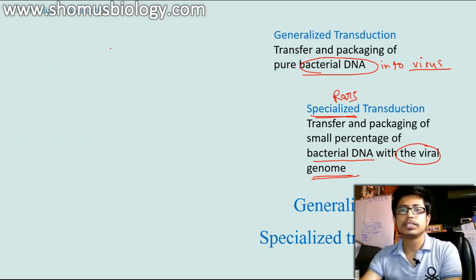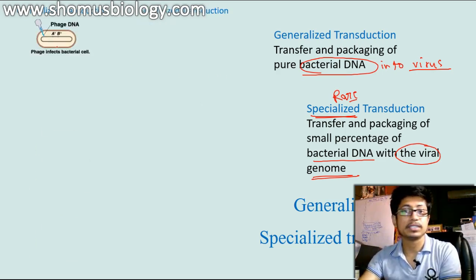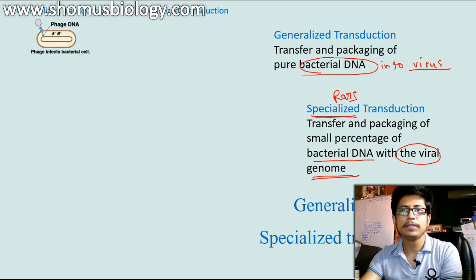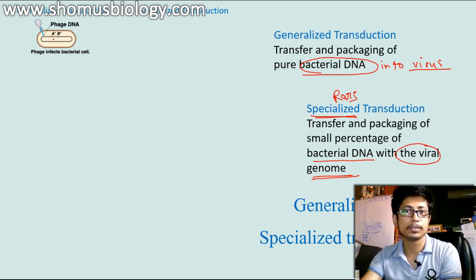Let us look first at generalized transduction. It starts with a bacterial cell, which is the target bacteria for infection by the bacteriophage virus. The phage virus infects this bacteria, and if you look here, the bacteria contains its own genome that carries two different genes, A plus and B plus. That means both these genes can be expressed properly and can produce the products of gene A and B in the bacteria.